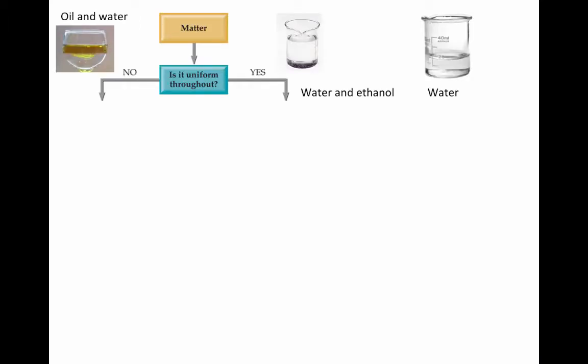When you're describing matter, consider the following options. Let's say you're looking at oil and water, water and ethanol, or water. An initial question one could ask is, is it uniform throughout, or do you see different regions? The oil and water is clearly in different regions of the container. We would call that a heterogeneous mixture. Both the water and ethanol and the water, they're both homogeneous.